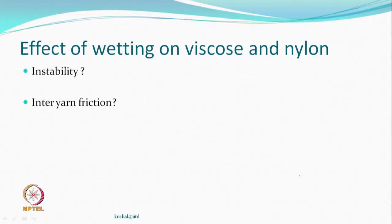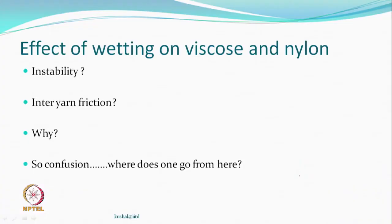Then they measured the inter-yarn friction. It was found that actually it was more — even on nylon filament yarns the inter-fiber and inter-yarn friction was higher, and even more so in the case of viscose filament yarns. Suddenly there was confusion: why did inter-yarn friction increase instead of decreasing? Because these fibers — viscose definitely, and nylon relatively — are more hydrophilic. They make hydrogen bonds with the water molecules, so shear and slip is reduced. This made the role of water an interesting question.